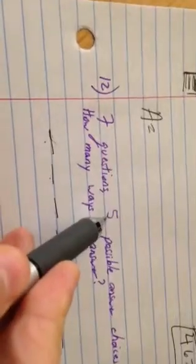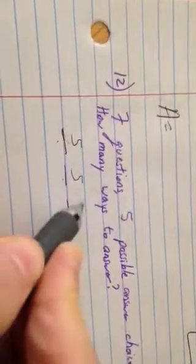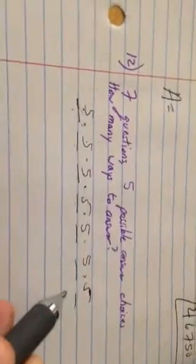And there are multiple choice, each with five possible answers. So there's five ways to answer the first question, five ways to answer the second, five, five, five, five, and five. And so if there's five ways to do the first event, five ways to do the second, five ways to do the third, and so on, you just multiply these all together, and you get that big number they're talking about.